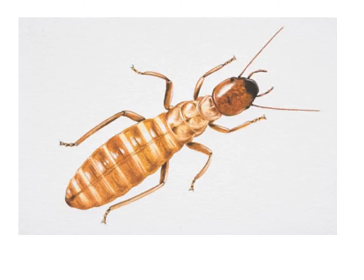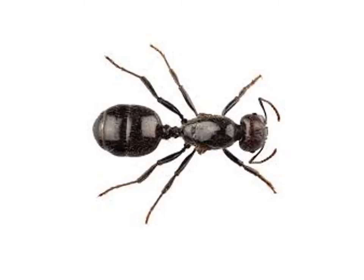So a quick pop quiz: what is this — is it an ant or is it a termite? If you notice, this one has straight antennae. There are no wings, so we can't make any statements about that. But there is also a very thick waist between the thorax and the abdomen, so that makes this a termite. How about this one? Note the thin waist and the elbowed antennae — again, no wings here — so it's an ant.